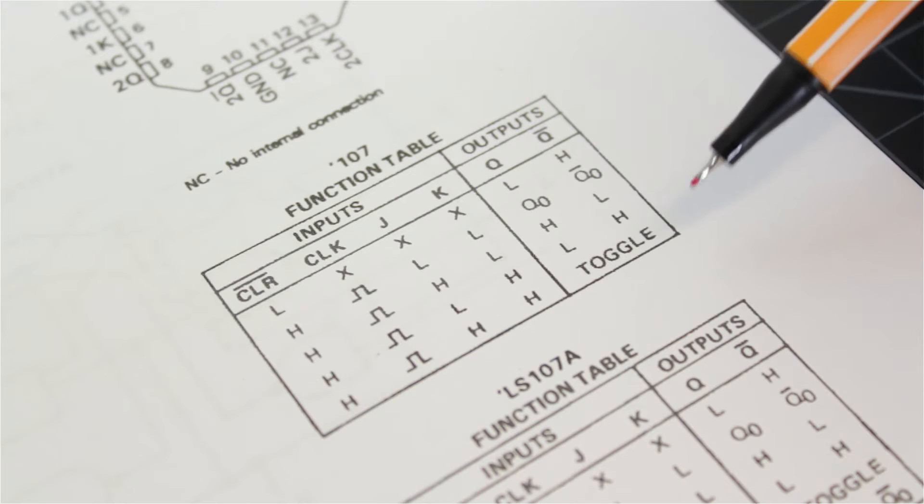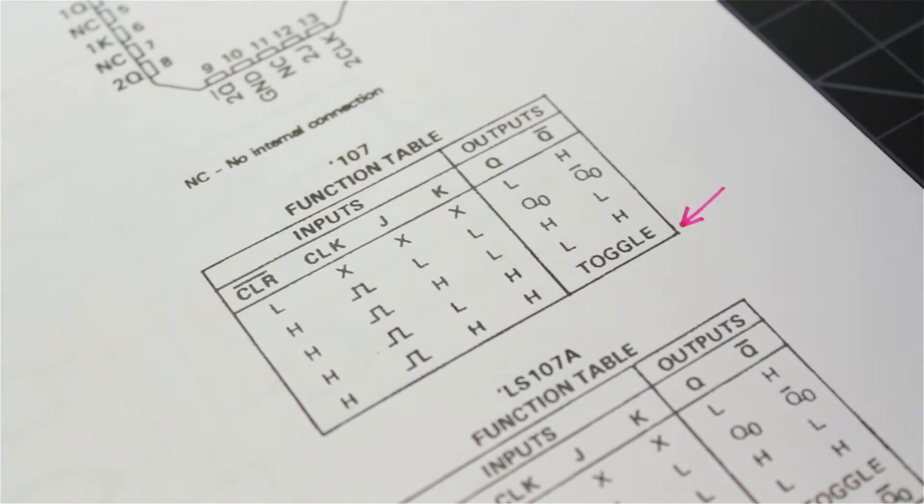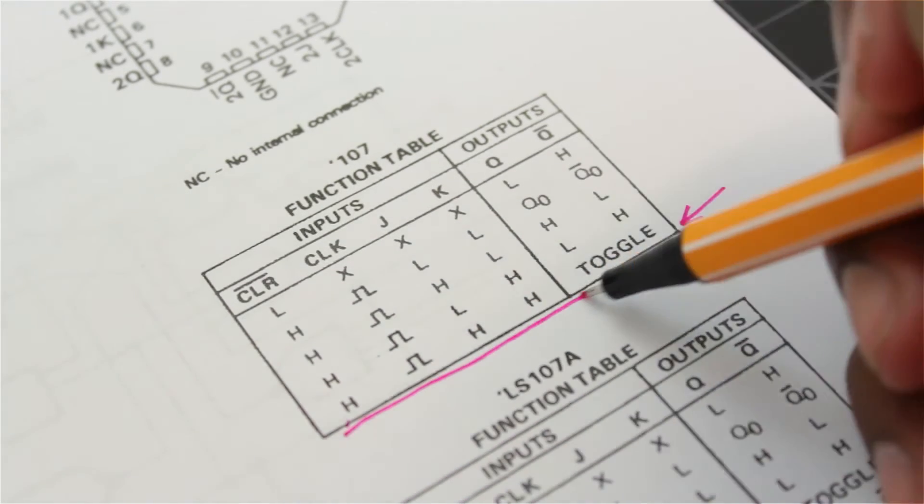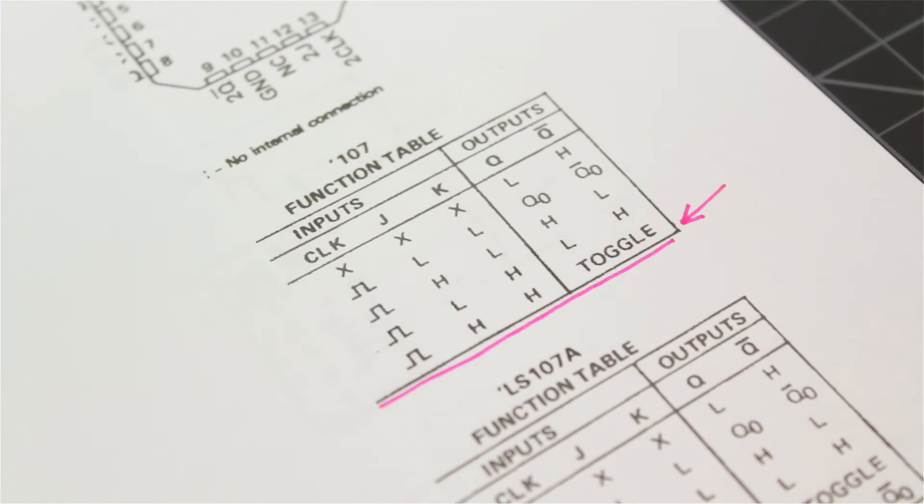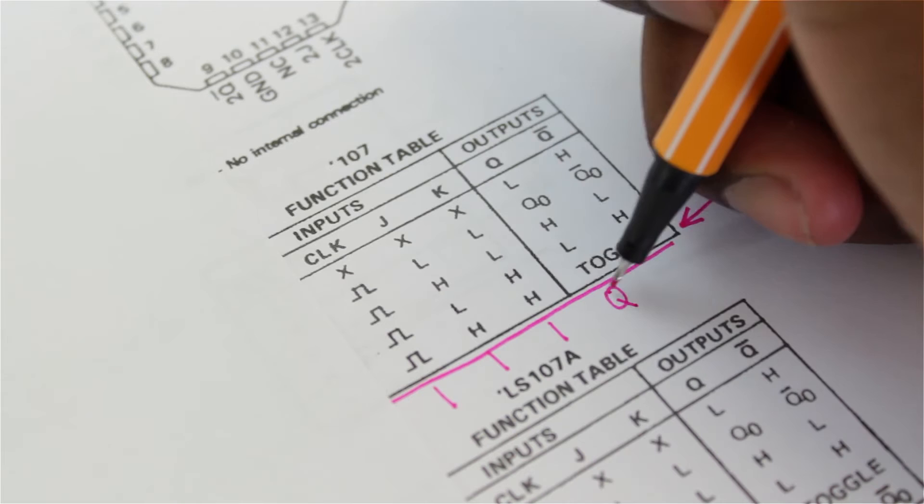A JK flip-flop is equal to an SR latch in every single one of these ways, except at the bottom of the truth table where both inputs are high. When both inputs are high, the output is toggled. This means if the output was high, then it goes low, Q becomes a Q complement, and vice versa.